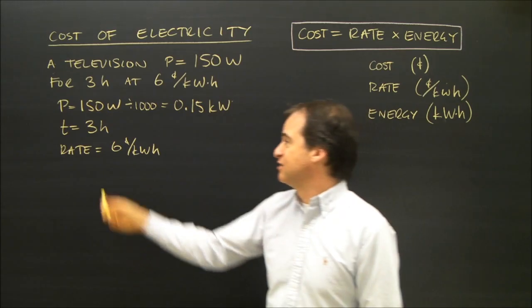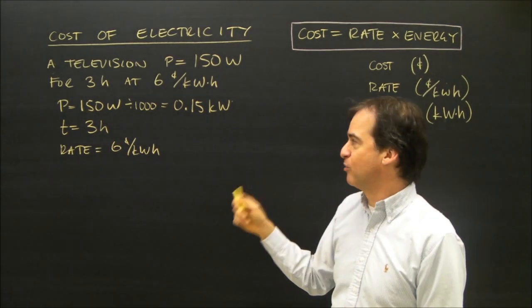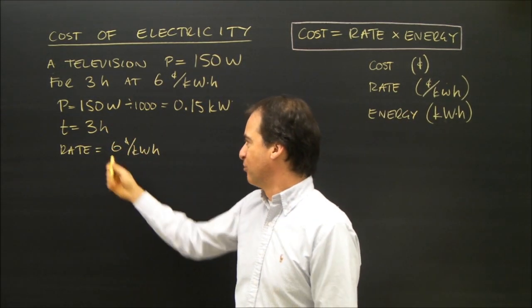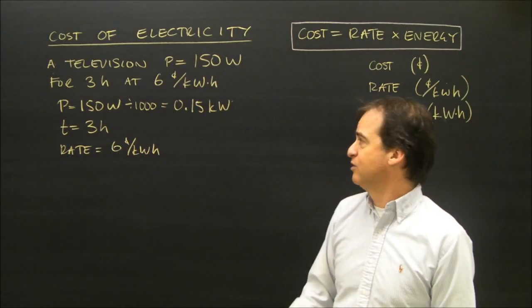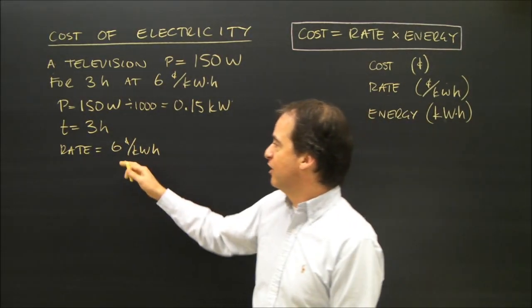The time, normally I'd change that to seconds, but this is in hours and I need it in hours, so that's okay. And the rate is six cents per kilowatt hour at the correct units. So I want to find the cost.